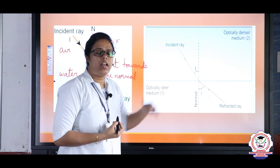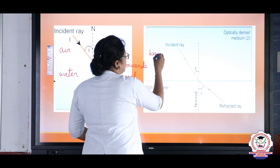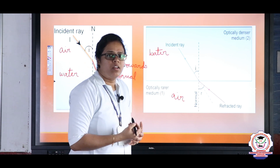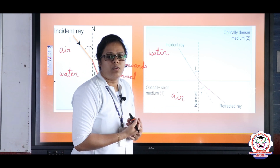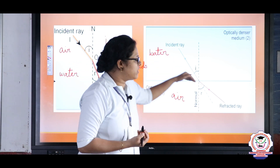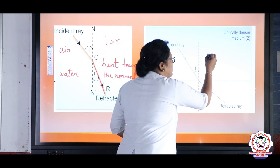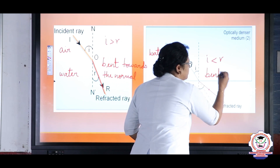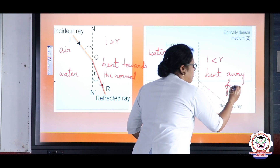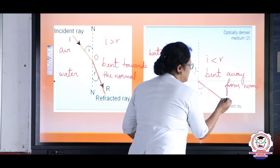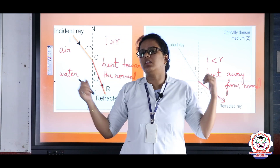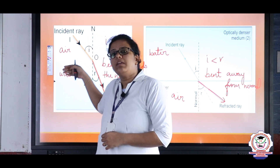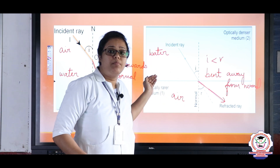In the second case, light comes from the denser medium to the rarer medium — for example from water to air. Just as a car moving from a rough road to a smooth road increases in speed, the speed of light also increases. Here the angle of incidence is smaller than the angle of refraction, and the light bends away from the normal.